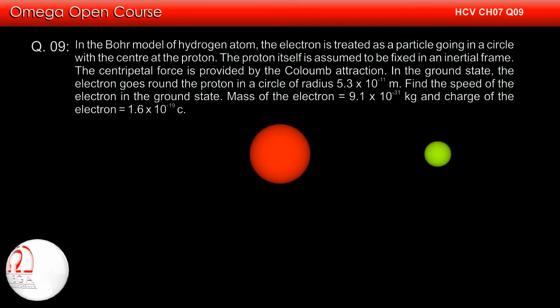In the Bohr model of hydrogen atom, the electron is treated as a particle going in a circle with the center at the proton.